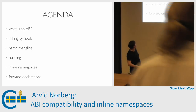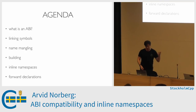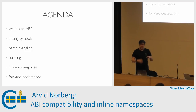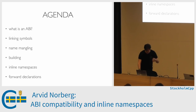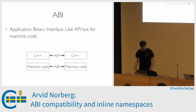The agenda is: we're going to have a brief review of what ABI is, how linkers work at a superficial level, name mangling, and then look at how you can deal with the issues. So the first three items are a description of the problem, and the last three items are various solutions to it.